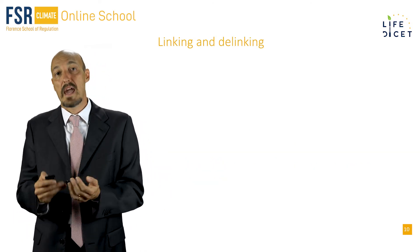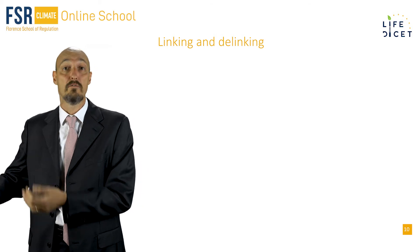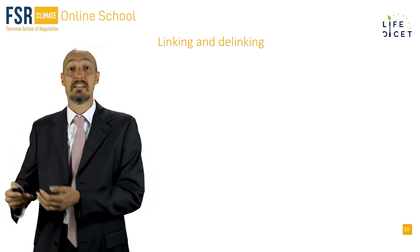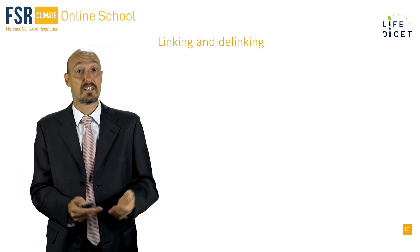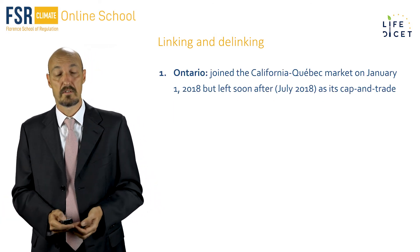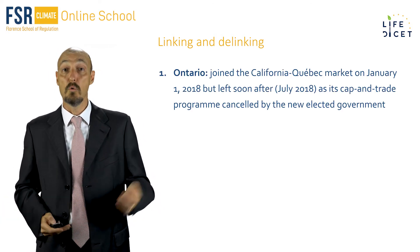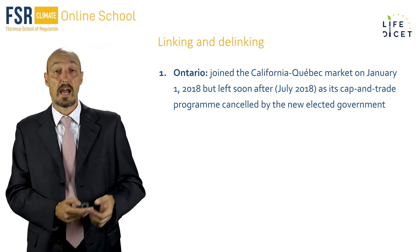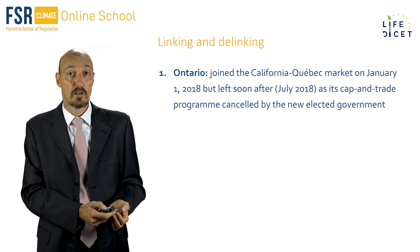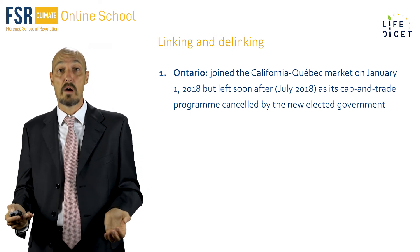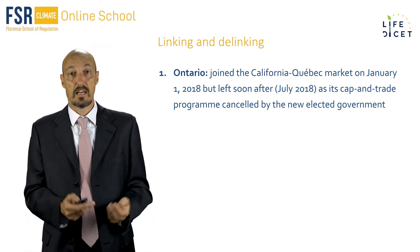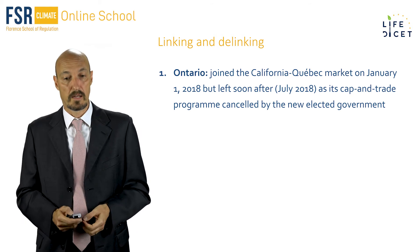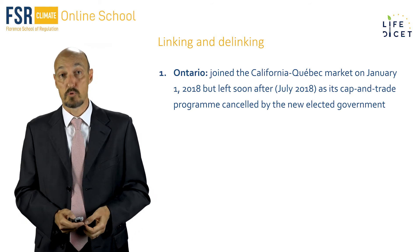Marriages may unfortunately sometimes end up in divorce, and the same applies to linking, that may end up in delinking, and we have seen several examples over these years. Ontario decided to join California and Quebec at the beginning of 2018, but after a few months left the linkage agreement when the newly elected government cancelled its cap and trade program.